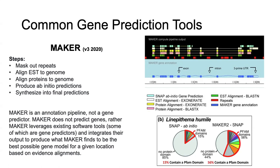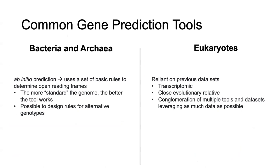To summarize the big differences: bacteria and archaea use ab initio prediction with a set of basic rules to determine an open reading frame — the more standard the genome, the better the tool works, though rules can be designed for alternative genotypes. For eukaryotes, it's almost completely the opposite: you're reliant on previous datasets, transcriptomic data, and protein predictions from close evolutionary relatives, using a conglomeration of tools to generate as much data as possible.